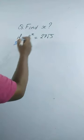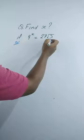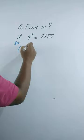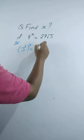Find x if 9 to the power x is equal to 27 square root 3. We can write 9 to the power x as 3 squared whole to the power x, and we can write 27 square root 3 as 3 to the power 3 times 3 to the power 1 by 2.